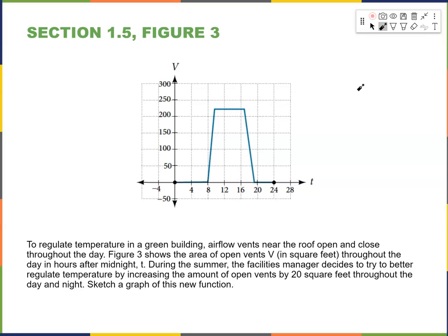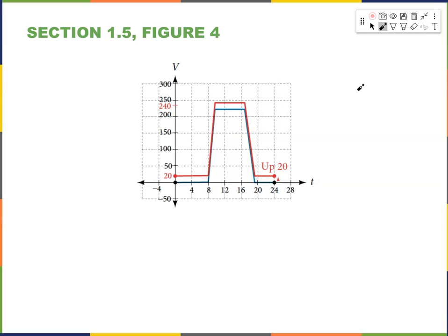Another example: to regulate temperature in a green building, air flow vents near the roof open and close throughout the day. Figure 3 shows the area of open vents v in square feet throughout the day and hours after midnight, t. During the summer, the facilities manager increases the amount of open vents by 20 square feet — a vertical shift up by 20. The new graph is shown in red.